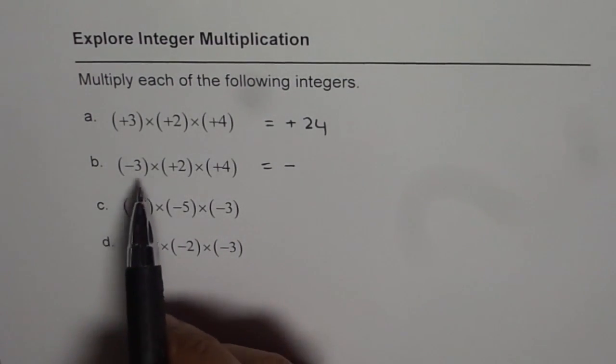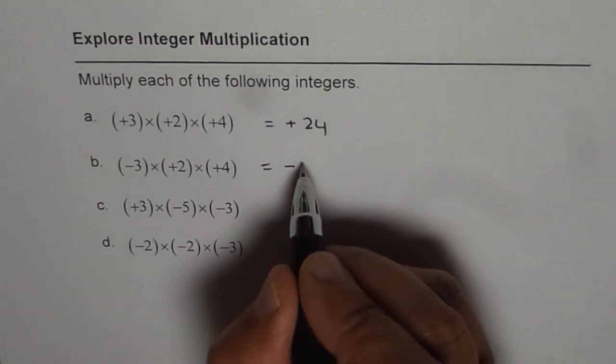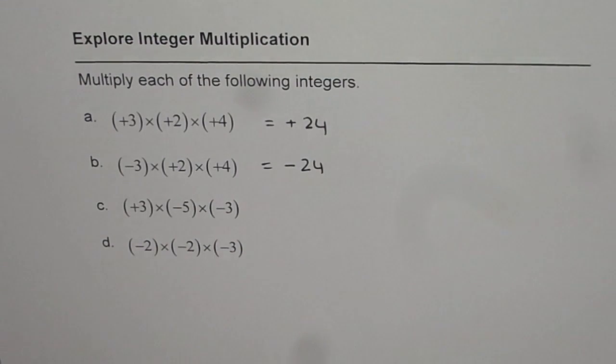Let us multiply the numbers. Three times two is six, and six times four is twenty-four. So we get minus twenty-four this time.